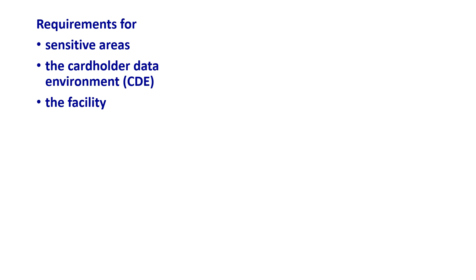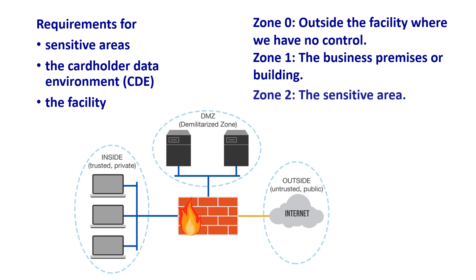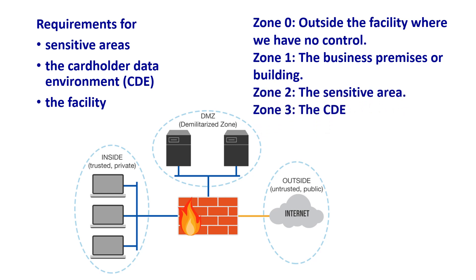Consider this example of physical security zoning: Zone 0 is outside the facility where we have no control. Zone 1 is the business premises or building. Zone 2 is the sensitive area. Zone 3 is the CDE. Each zone has a different level of security applied, including access control, duration of stay, visitor logs, and more.